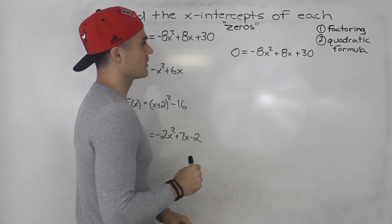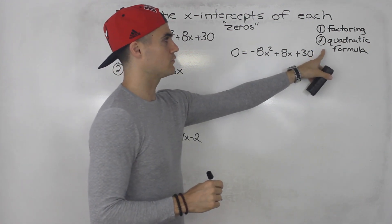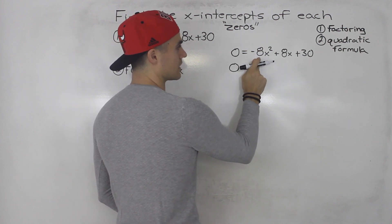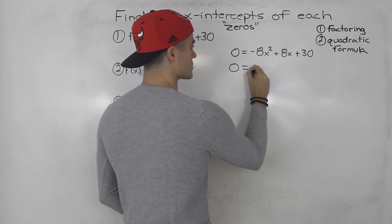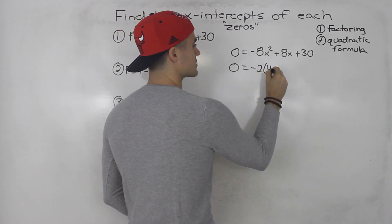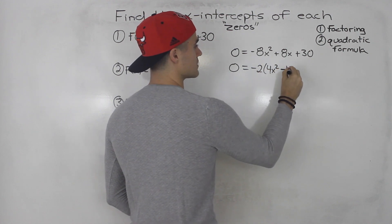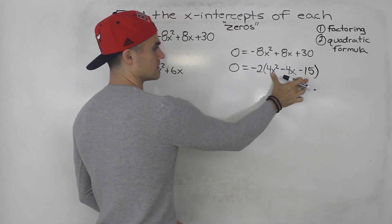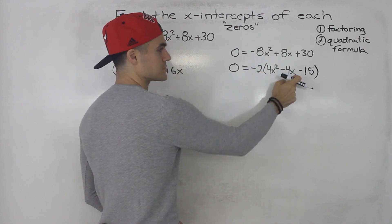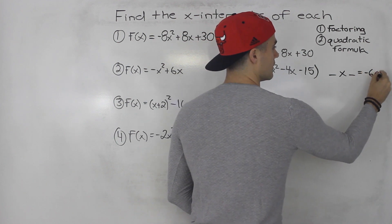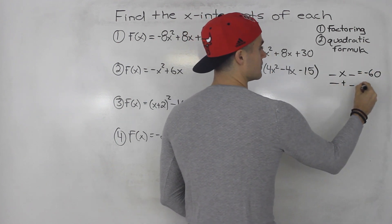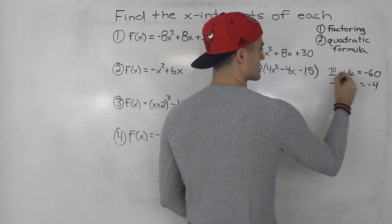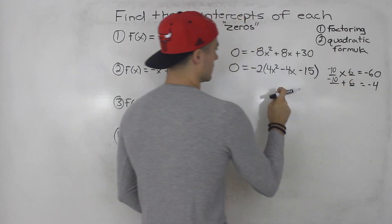From here you can throw it in the quadratic formula if you want, but let's see if we can factor this. Notice that from everything we could take out a 2, and I'm going to take out a negative 2 in order to make that leading coefficient positive. So with negative 2 factored out, we'd be left with 4x squared minus 4x minus 15. Then 4 times negative 15 gives us negative 60, and the b-value is negative 4. Two numbers that multiply to negative 60 and add up to negative 4 — negative 10 and 6 work.